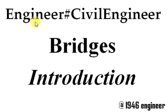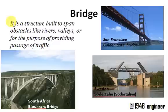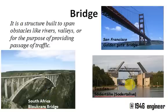So these are the two things we are going to discuss in this video. First, what is the definition of a bridge? The definition of a bridge is: it is a structure built to span obstacles like water, rivers, or valleys, for the purpose of providing passage of traffic.